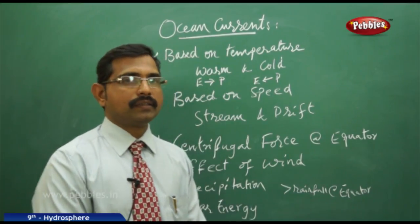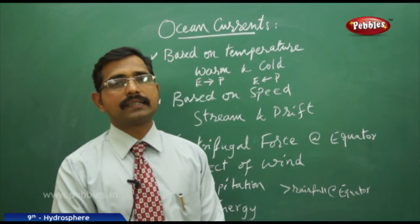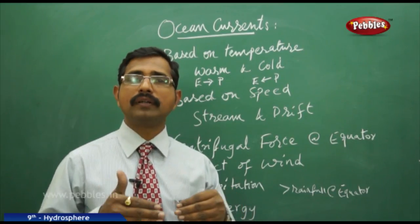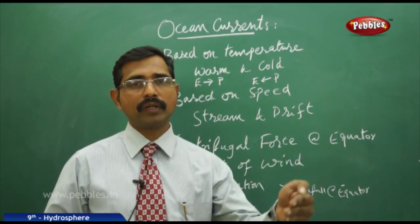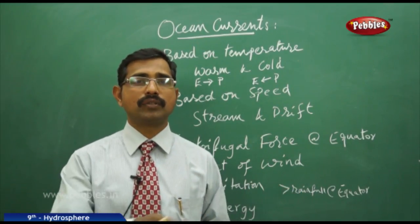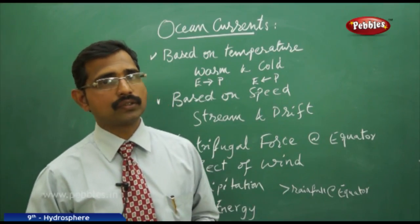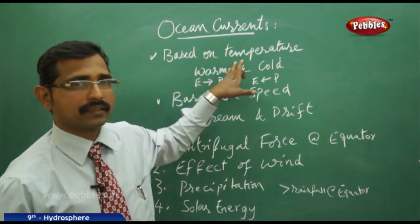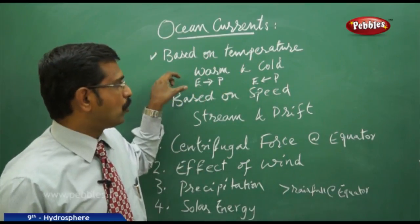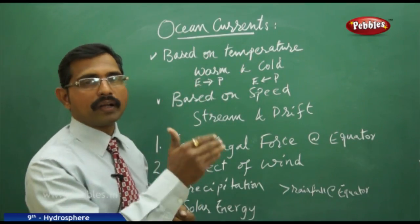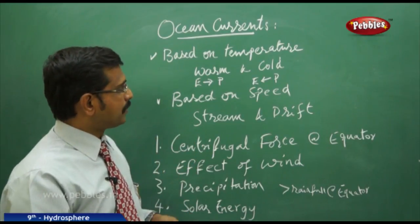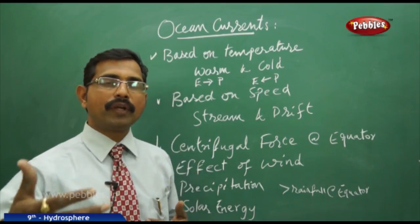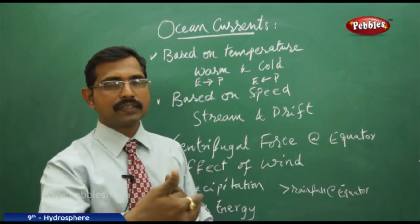Ocean currents are nothing but a general movement of a water mass in different directions — maybe from the equator to the polar region or from the polar region to the equator. We call them warm ocean currents when they flow from the equator toward the polar region, and cold ocean currents when they flow from the polar region toward the equator.